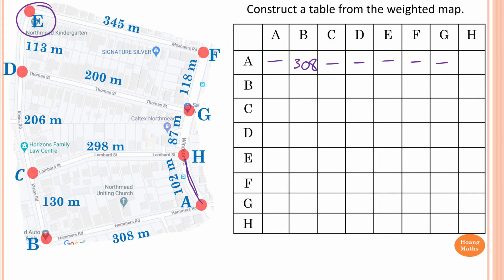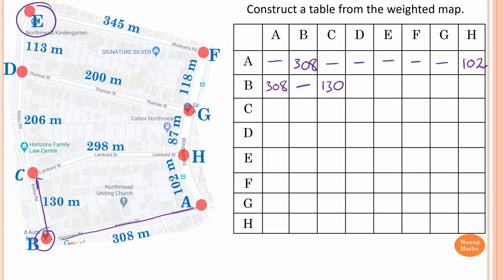From A to H is 102, so write 102. Similarly, from B to A is 308. From B to B, there is no weighting — leave it blank. From B to C, the weighting is 130. From B to D and other vertices, there is no direct connection. The only direct connections from B are B to A and B to C.